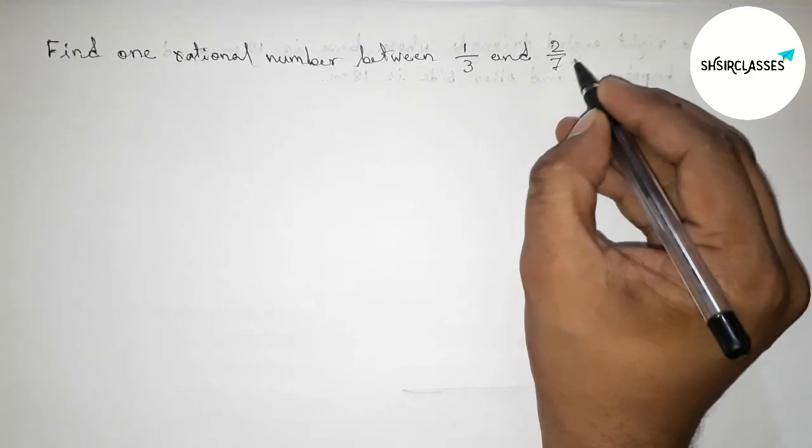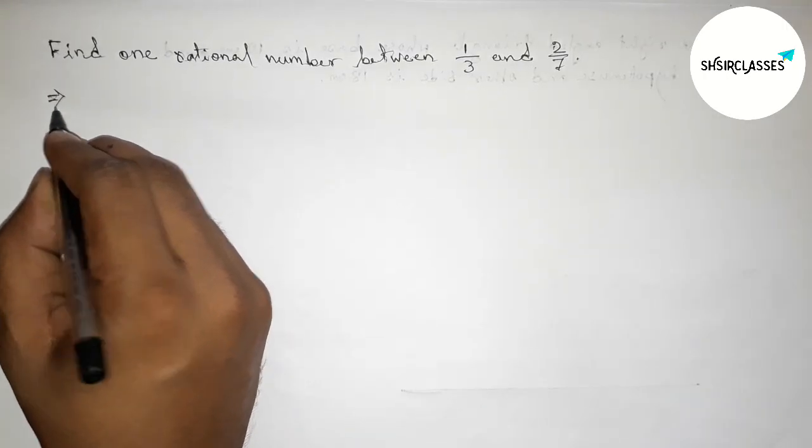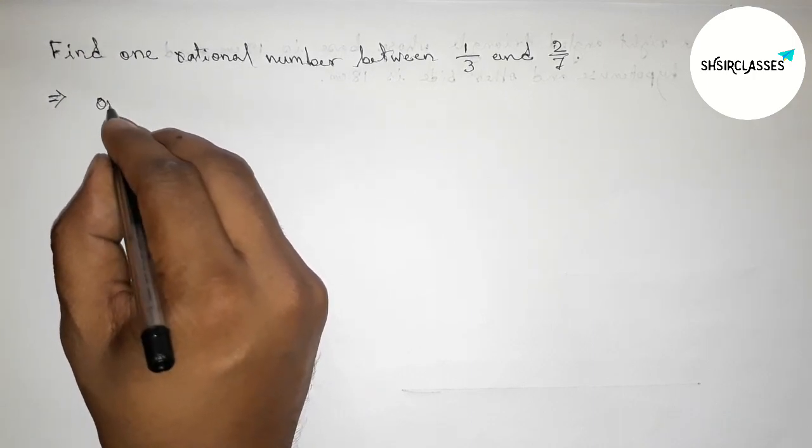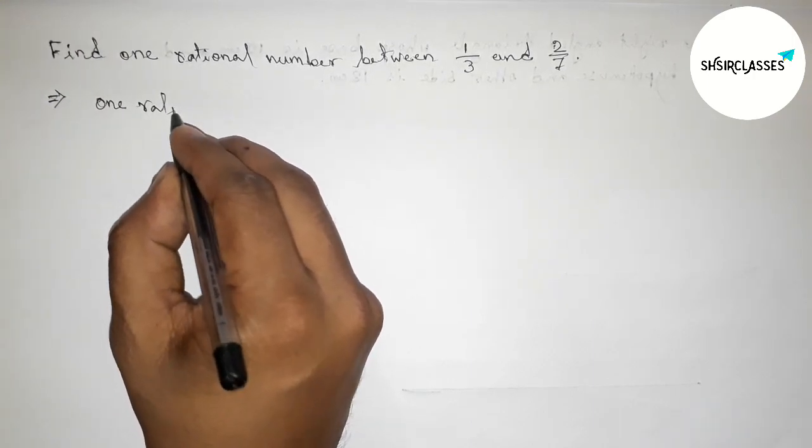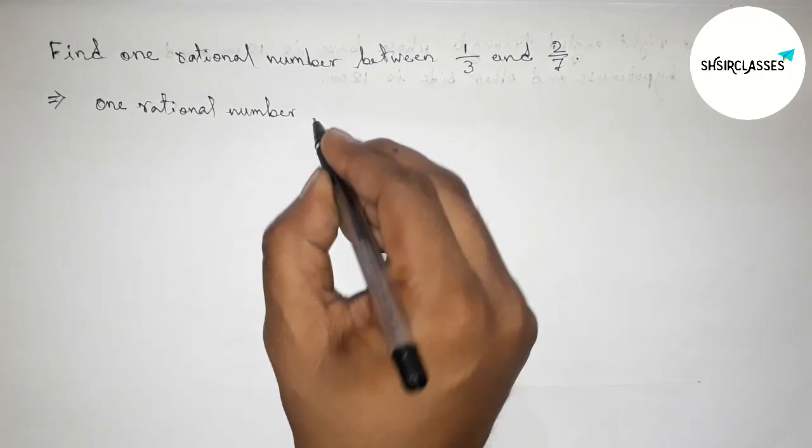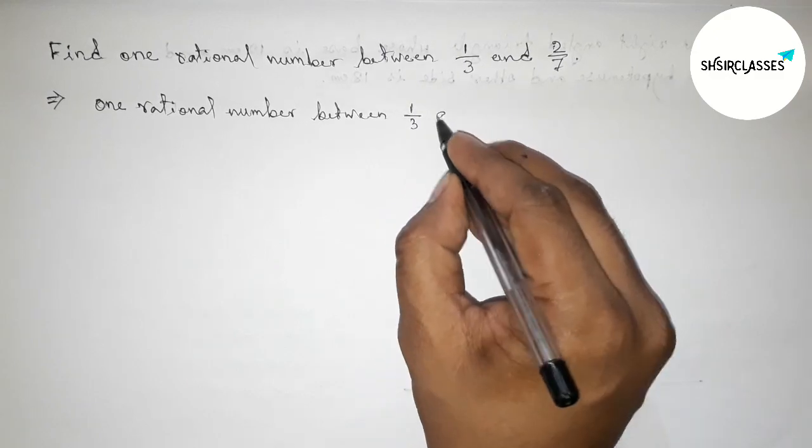First of all, let us solve this problem here. I am going to use the mean formula to find one rational number between 1/3 and 2/7. So here, one rational number between 1/3 and 2/7 is found by finding the mean of 1/3 and 2/7.